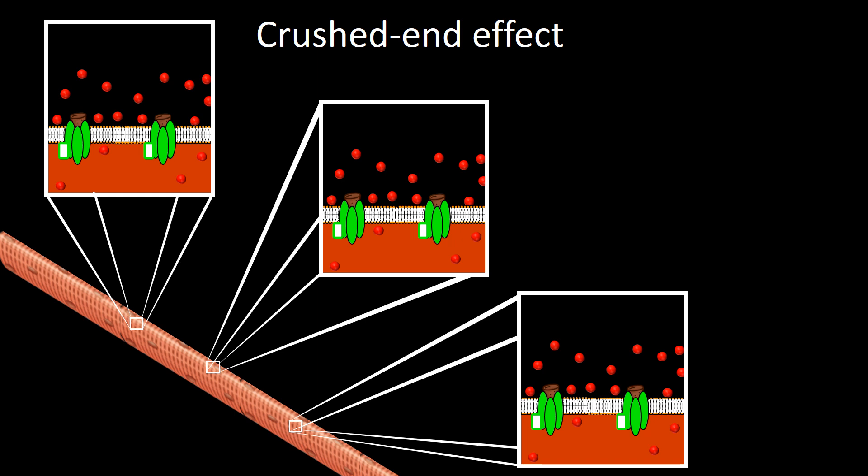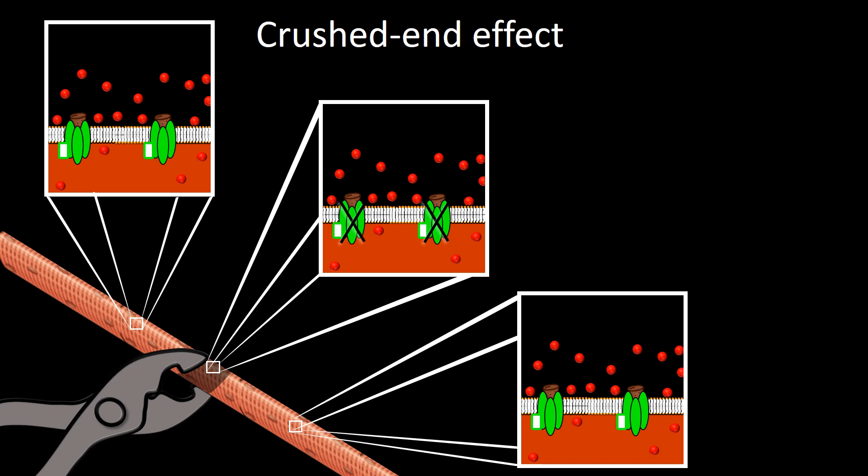Now, let's focus on the crush-end effect. The crush-end effect, which I am illustrating by the dark region of the muscle fiber between the jaws of the pliers, refers to a segment of the membrane with no longer functional voltage gated channels, as indicated by the X on the channels.